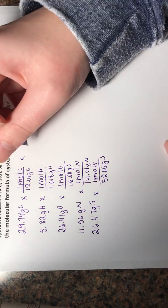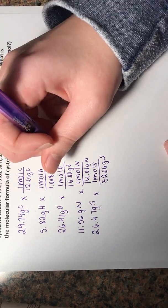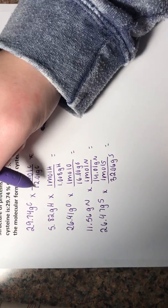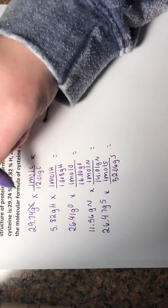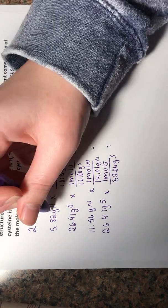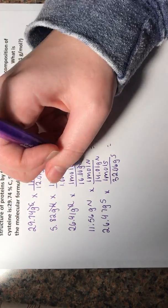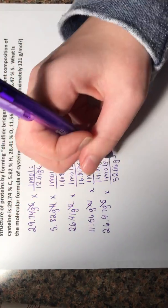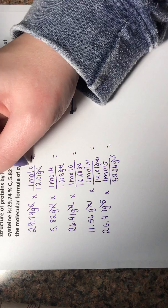As you can see, these units cancel right here. So the grams of carbon, grams of carbon, grams of hydrogen, grams of oxygen, these units cancel. So you are left with a mole of substance.